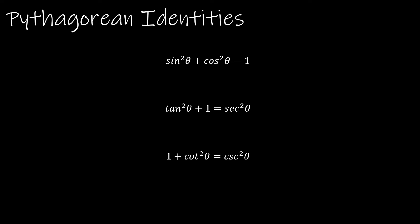The other identities you should be familiar with are the Pythagorean identities. Sine squared theta plus cosine squared theta is equal to 1. Tangent squared theta plus 1 is equal to secant squared theta. And 1 plus cotangent squared theta is equal to cosecant squared theta. These are the Pythagorean identities.